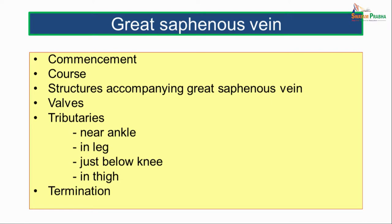Moving on to the great saphenous vein. We will study it as its commencement, course, structures accompanying the great saphenous vein, the valves, tributaries — which we study as those near the ankle, in the leg, just below the knee, and in the thigh — and its termination.